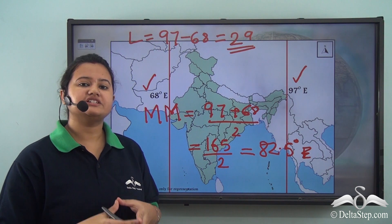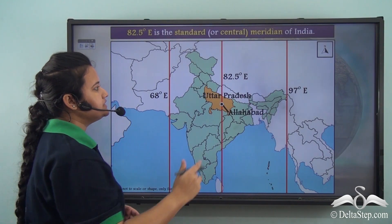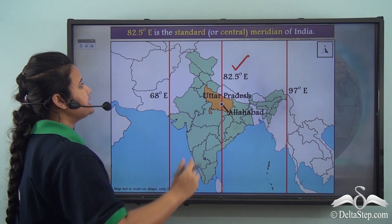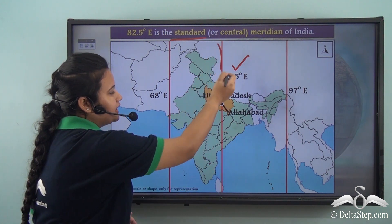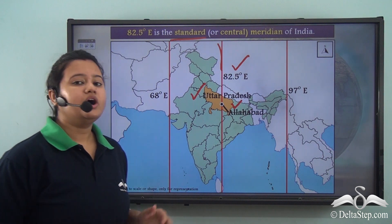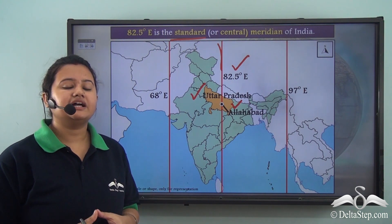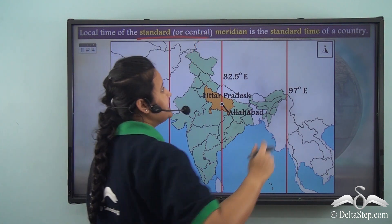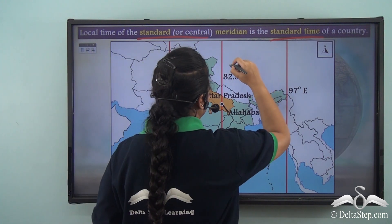So 82.5 degrees east is the mean meridian or central meridian of India, also known as the standard meridian. This standard meridian passes exactly through the middle part of the country, and specifically it crosses over Allahabad, a city in Uttar Pradesh. The entire country follows the local time of this standard meridian to avoid all confusion regarding time. The local time of the standard meridian is known as the standard time of that country, and the standard time of India is determined by 82.5 degrees east.